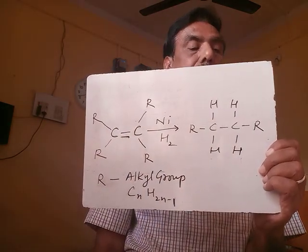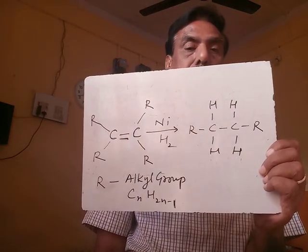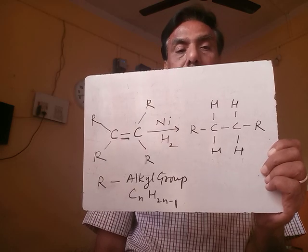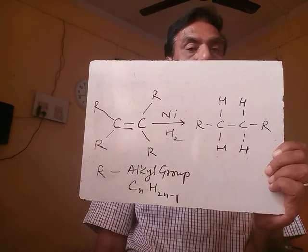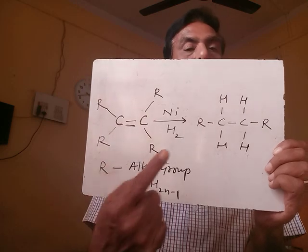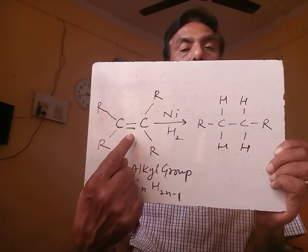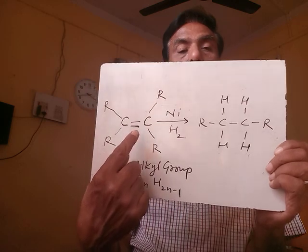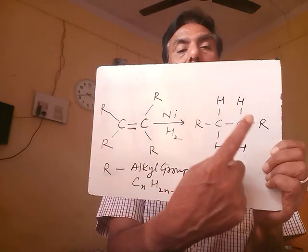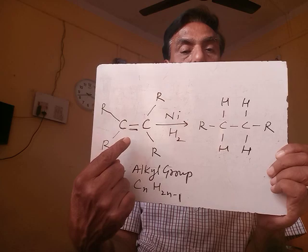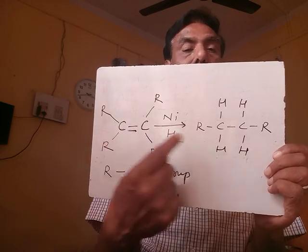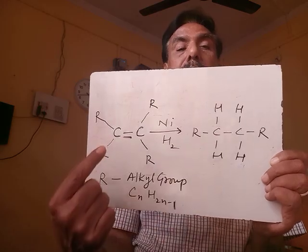R is the alkyl group — R can be CH₃, C₂H₅, or C₃H₇. This unsaturated hydrocarbon, having at least one double bond, has now become saturated — all single bonds. This saturated hydrocarbon was previously unsaturated. This process is known as hydrogenation — the addition of hydrogen to an unsaturated hydrocarbon is called hydrogenation.